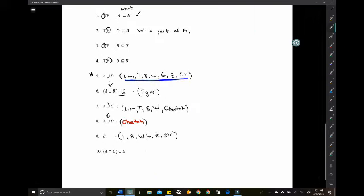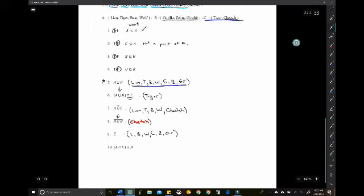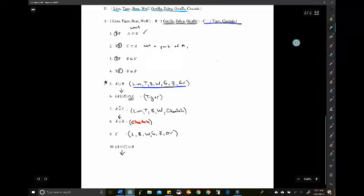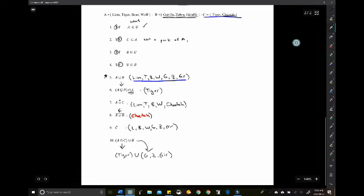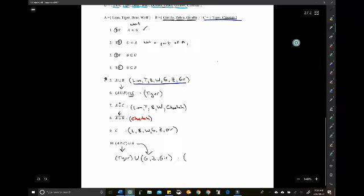And A intersect C union B. So what first, you can do these like order of operations. First, what do A and C share? A and C each share Tiger. Now we're going to combine that with B, which is Gorilla, Zebra, Giraffe. And we're adding those. So your final result would be Tiger, Gorilla, Zebra, Giraffe. So not so much traditional math, but some logical thinking, counting type stuff for you there.